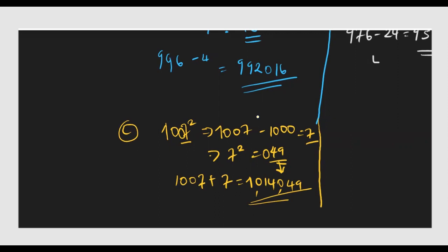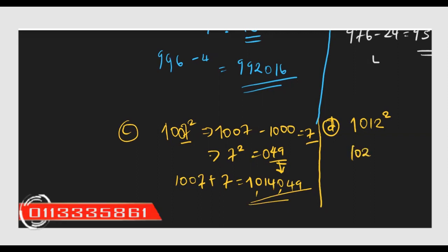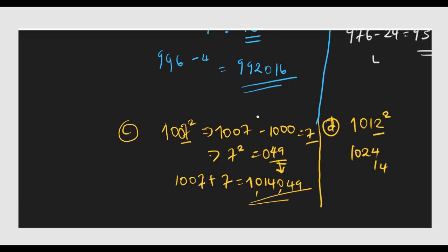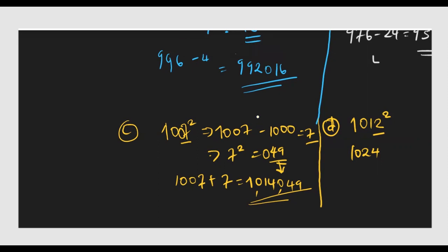Let's do one more: 1012 squared. The difference from 1000 is 12, so we add 1012 plus 12 to get 1024. Then 12 squared is 144, so we append 144 to get the answer 1,024,144. This is how calculation becomes easier — you can always use this shortcut.